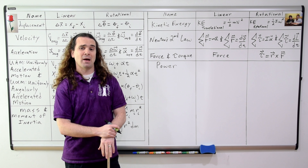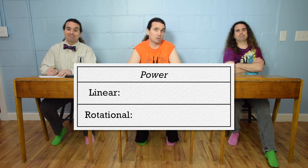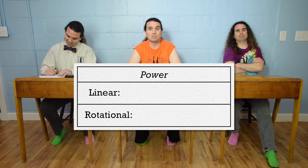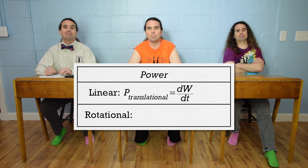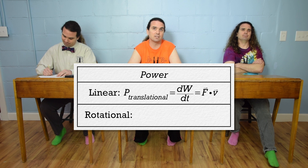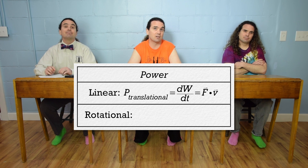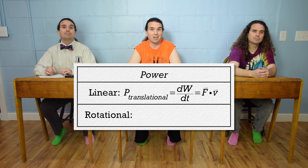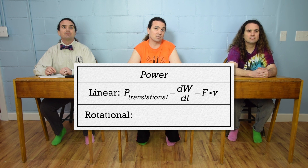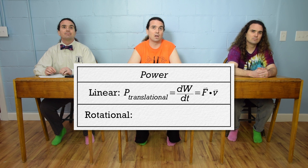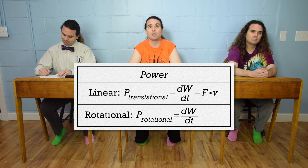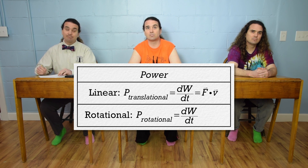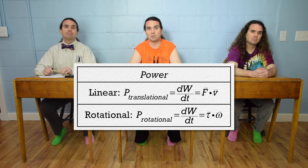Bobby, the equations for power, please. Linear or translational power is the derivative of work with respect to time, which also equals the dot product of force and velocity, where both force and velocity are vectors. Rotational power equals the derivative of work with respect to time, only now it's the dot product of torque and angular velocity, where torque and angular velocity are vectors.